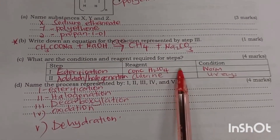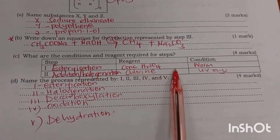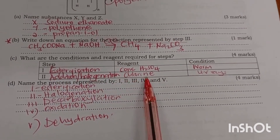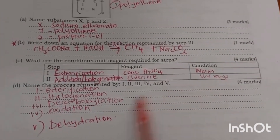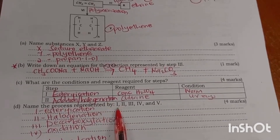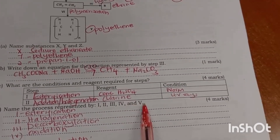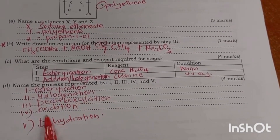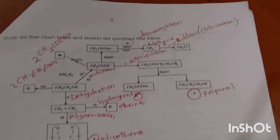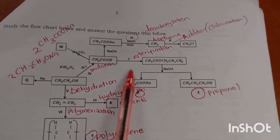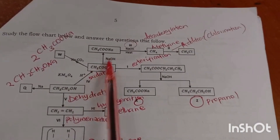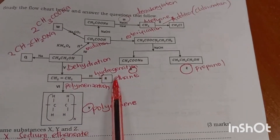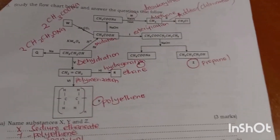Conditions required for step one — esterification: concentrated sulfuric acid. For halogenation you need UV rays. Name the processes labeled one through five: esterification, halogenation, decarboxylation, oxidation, and dehydration.